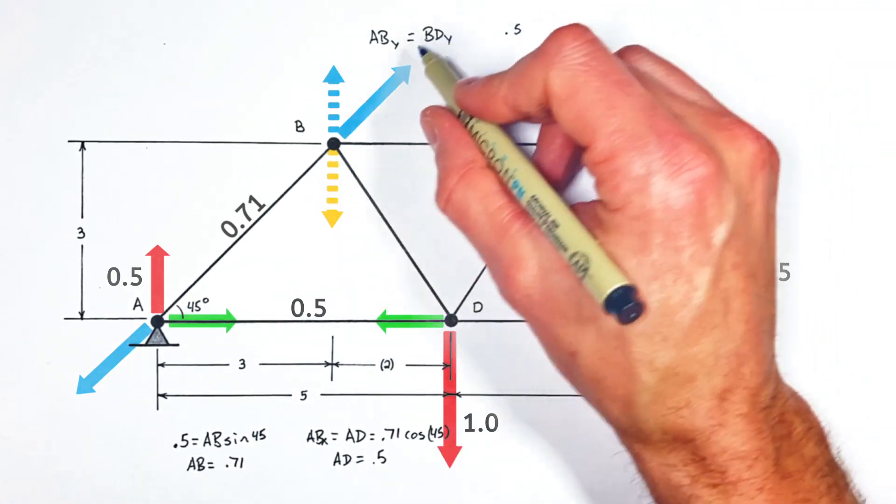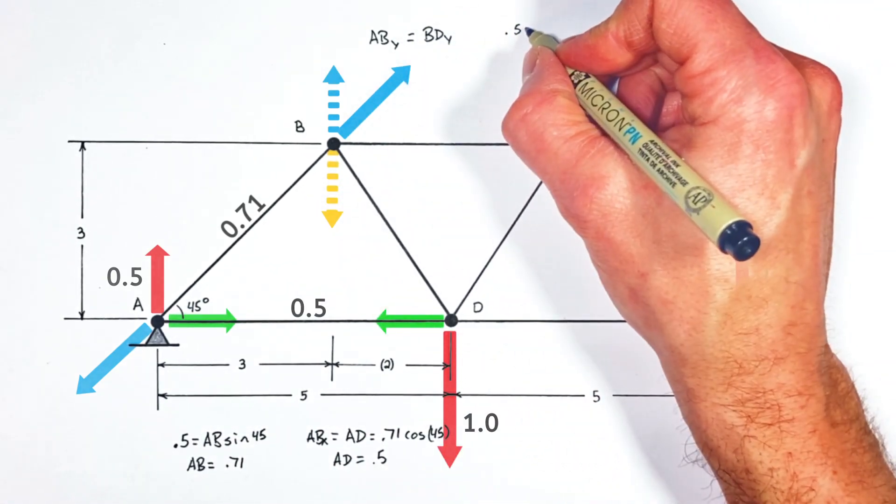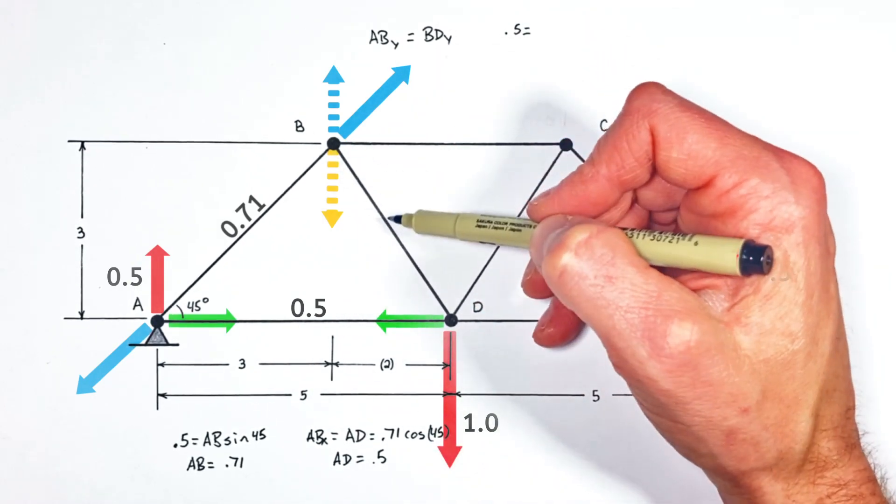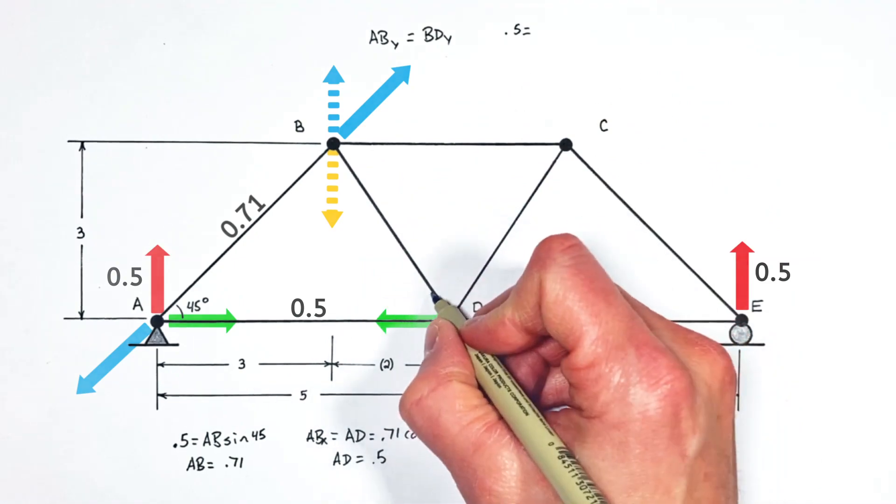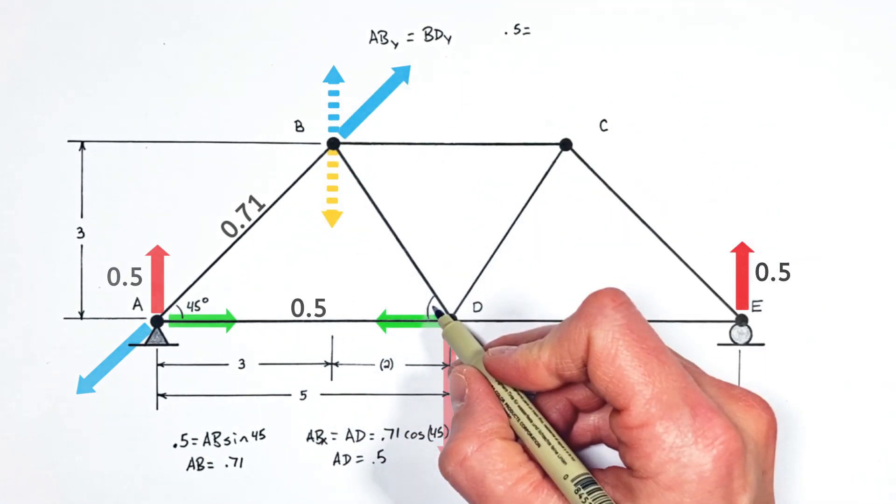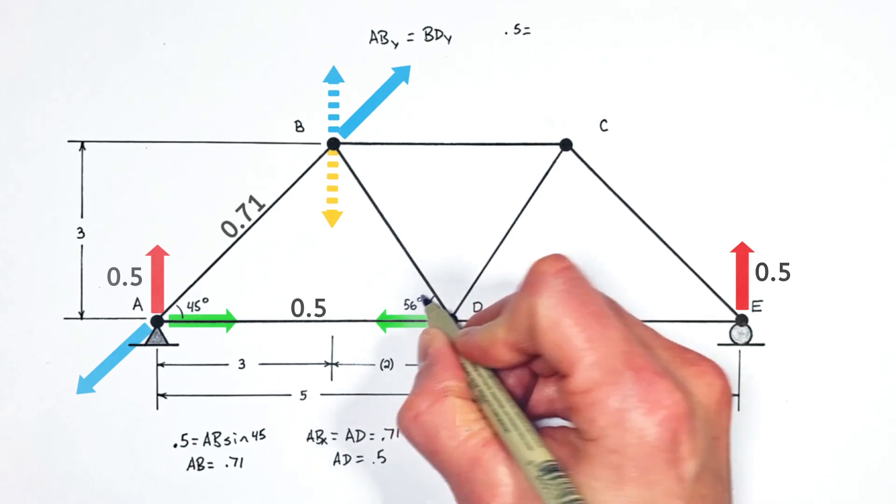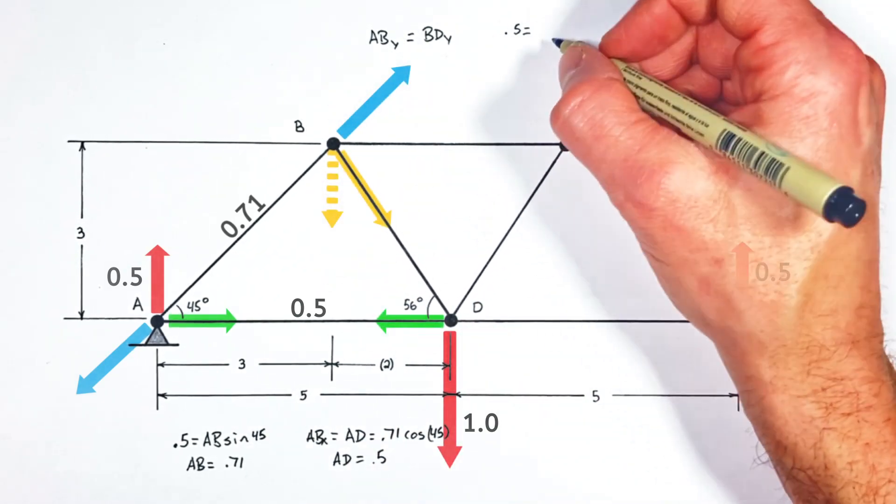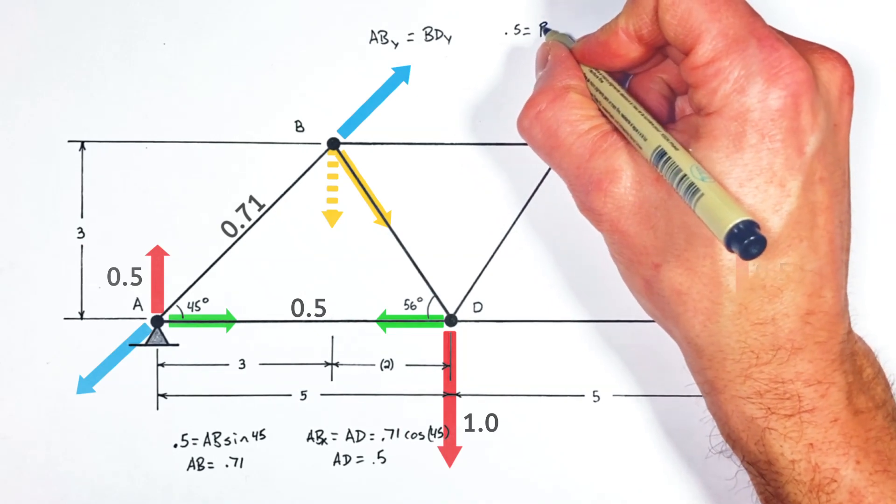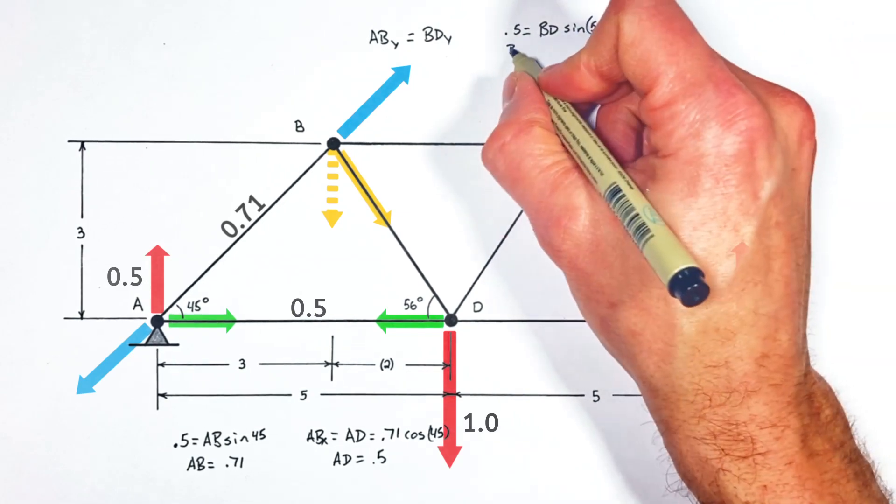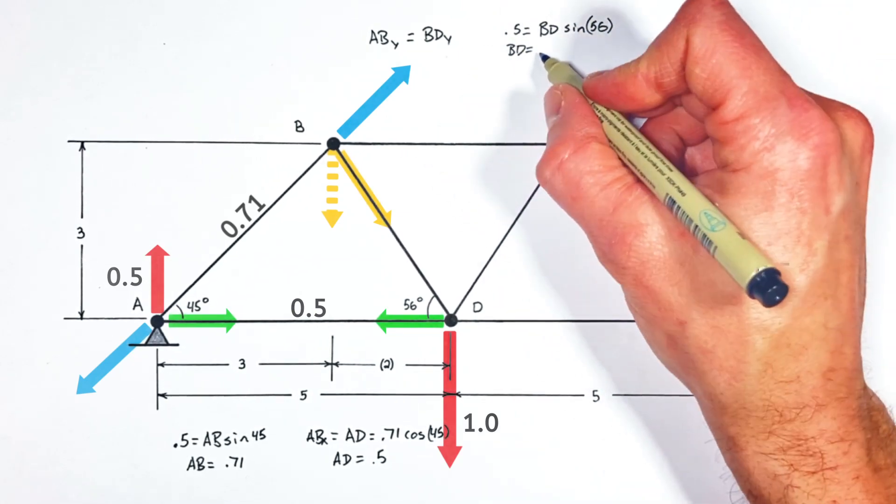So if 0.5 is equal to BDY, we can say the vertical component of BD downward is 0.5, and again using the geometry of this truss to find this angle right here, which is 56 degrees, we can solve for the force in BD. Setting 0.5 equal to the force in BD multiplied by the sine of 56, we find BD is equal to 0.6.